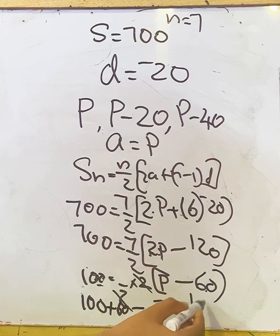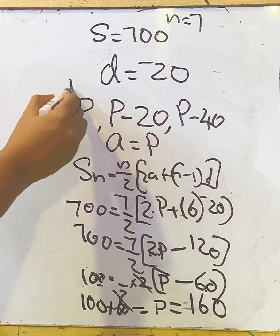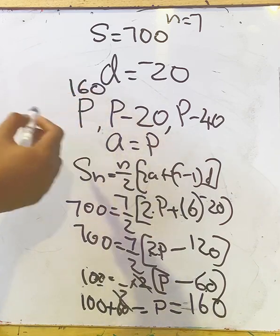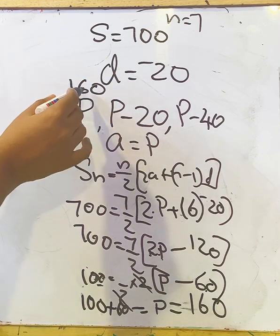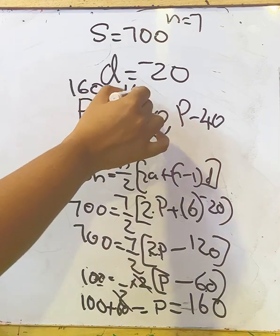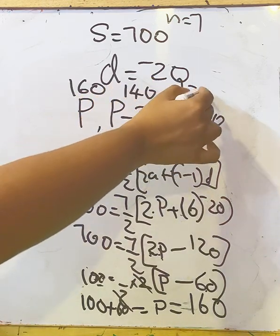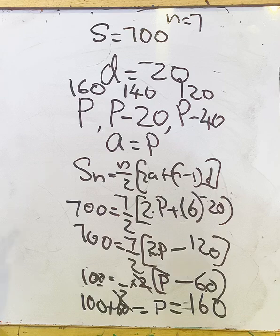So the first cash prize is 160. Now, 20 less than the preceding price means here 140, here 120. Likewise, we can say 7 terms: 160, 140, 120, 100, 80, 60, 40. Each term differs by 20.